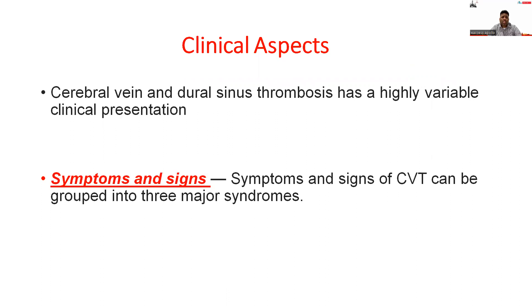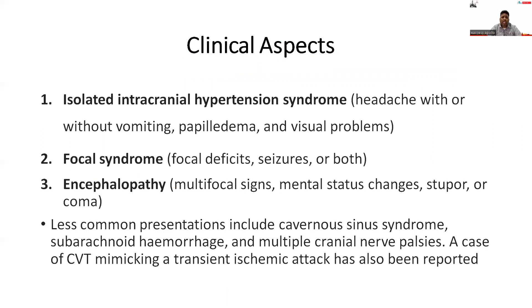Cerebral vein and dural sinus thrombosis has a highly variable clinical presentation. Symptoms and signs of CSVT can be grouped into three major syndromes. First, isolated intracranial hypertension syndrome, which presents with headache with or without vomiting, papilledema, and visual problems. Second, focal syndromes, including focal deficits, seizures, or both. Third, encephalopathy, which includes multifocal signs, mental status changes, stupor, or coma.